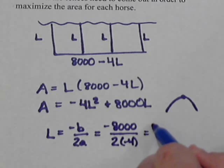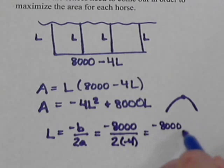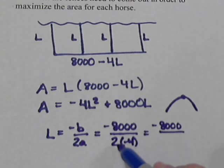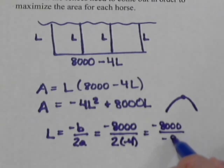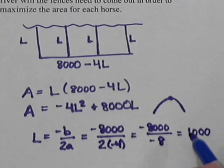So that would be negative 8,000 over negative 8 which comes out to be 1,000 feet.